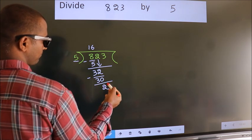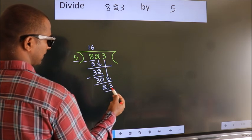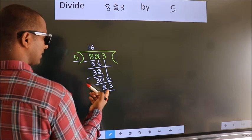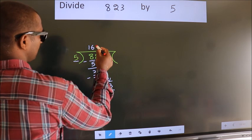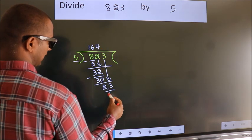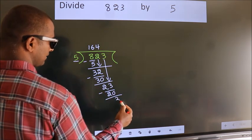After this, bring down the beside number. So 3 down. So 23. A number close to 23 in the 5 table is 5, 4, 20. Now we subtract. We get 3.